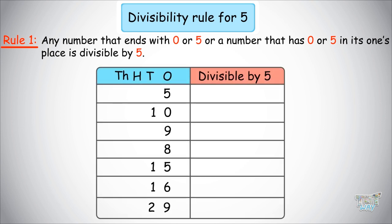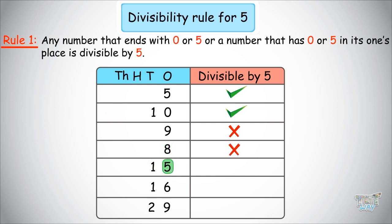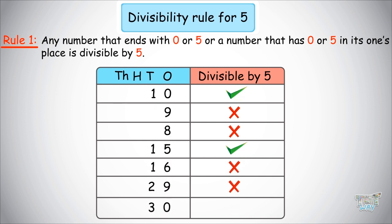Here we have some numbers and we will find out whether or not each is divisible by 5. 5 is definitely divisible by 5. 10: ones place is 0, so it is divisible by 5. 9: no, this is not divisible by 5 because its ones digit is 9. 8: no, this is not divisible by 5. 15: ones place is 5, so yes, it is divisible by 5. 16: ones place is 6, so it's not divisible by 5. 29: ones place is 9, so it's not divisible by 5. 30: ones place is 0, so it is divisible by 5.